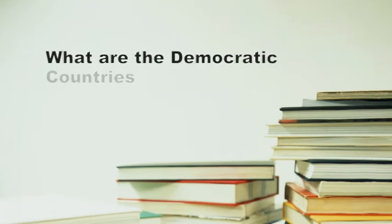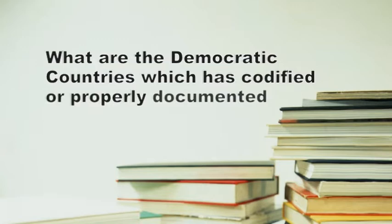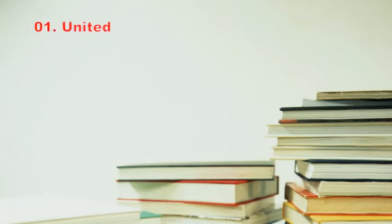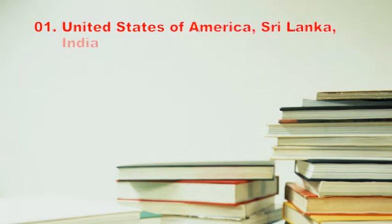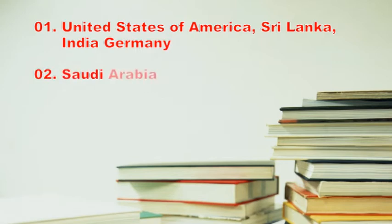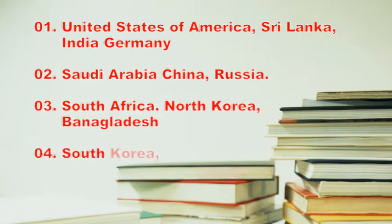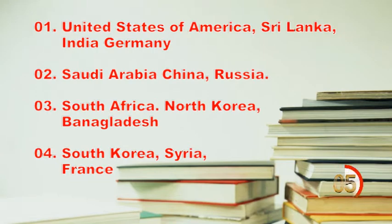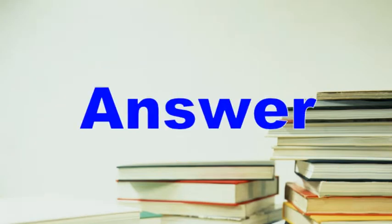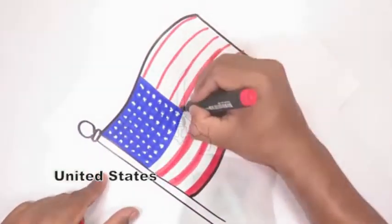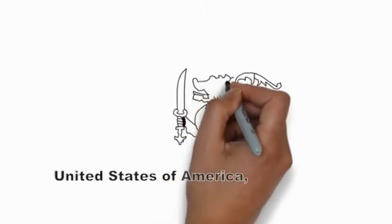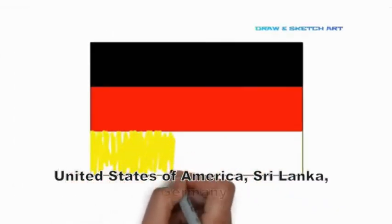Question 6: What are the democratic countries which have codified or properly documented constitutions? 1. United States of America, Sri Lanka, India, Germany. 2. Saudi Arabia, China, Russia. 3. South Africa, North Korea, Bangladesh. 4. South Korea, Syria, France. Answer: 1 — United States of America, Sri Lanka, India, Germany.